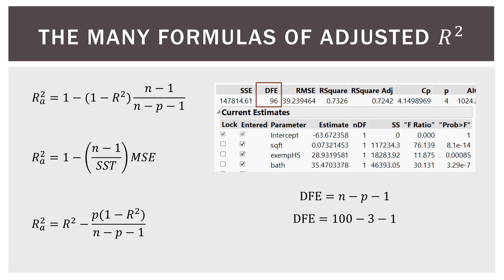Here we have 100 — that's the number of observations — minus three, the number of variables, minus one. So in this case DFE is 96. MSE is also embedded here because MSE is just SSE divided by DFE. So if we take 147,815 divided by 96, that gives us our MSE.